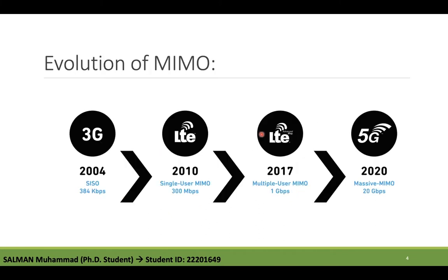Looking at the brief history of MIMO: back in 2004 we used SISO — single antenna at transmitter and receiver. For example, the 3G system introduced in 2004 achieved data rates up to 384 kbps with no multiplexing gain, diversity gain, or array coding. Then around 2010, MIMO was adopted and was capable of up to 300 Mbps throughput, employed in LTE systems.